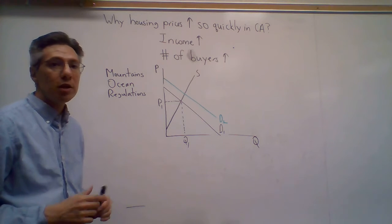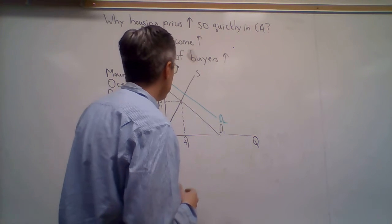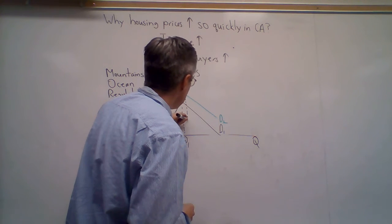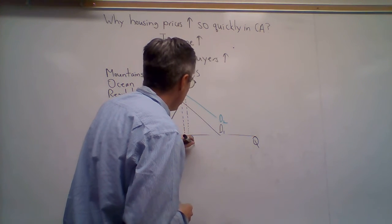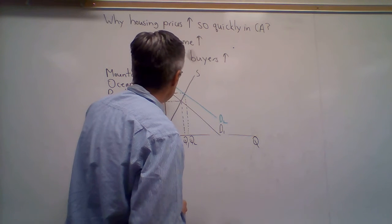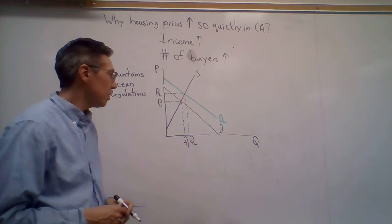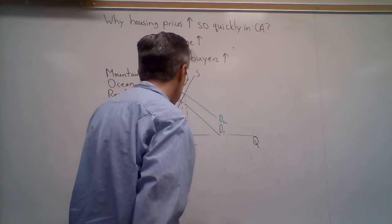So the demand shifts to the right, and what do we see in terms of the effect? Well, as we normally have for a rightward shift of the demand curve, we have both the price and the quantity going up, P1 to P2, Q1 to Q2.